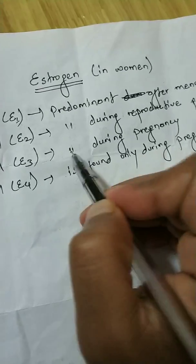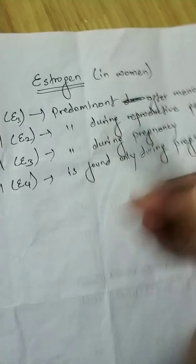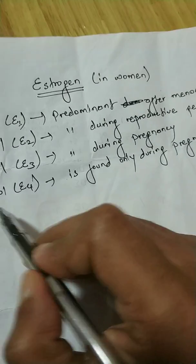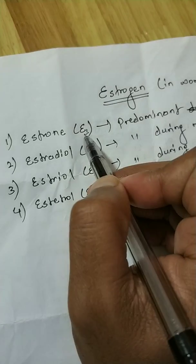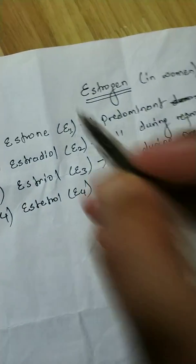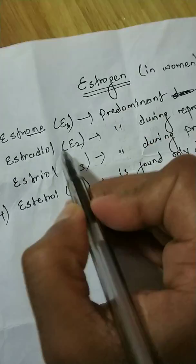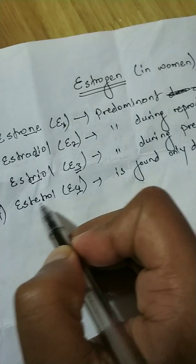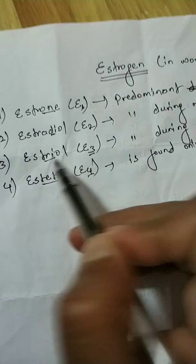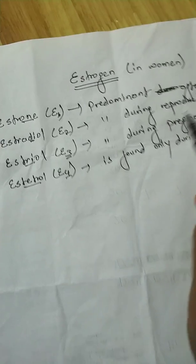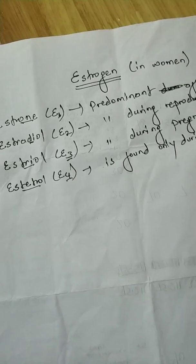Don't get confused: E3 is predominant during pregnancy, meaning it is produced during other periods also but is predominant during pregnancy. E4 is not produced every time — it is only produced during pregnancy. To remember the names: estradiol has 'di' for E2, estriol has 'tri' for E3, and estetrol has 'tetra' for E4. So: E1 predominant after menopause, E2 during reproductive period, E3 during pregnancy, and E4 only found during pregnancy.